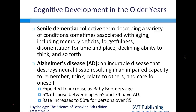Regarding cognitive development in older years: senile dementia is a collective term describing a variety of conditions sometimes associated with aging, including memory deficits, forgetfulness, disorientation for time and place, and declining ability to think.